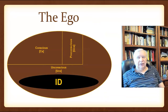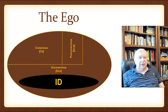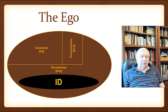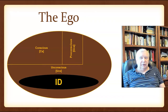So the id — totally in the unconscious, totally driven by the pleasure principle. But we can't go through life just immediately getting gratification for things. So Freud speculated on a second psychic structure that would have a way of dealing with reality, and that's the ego.